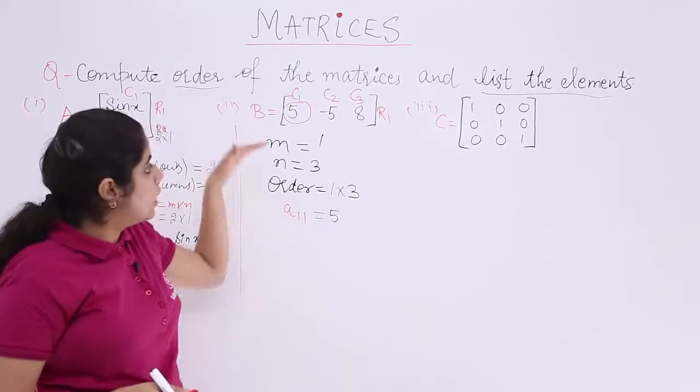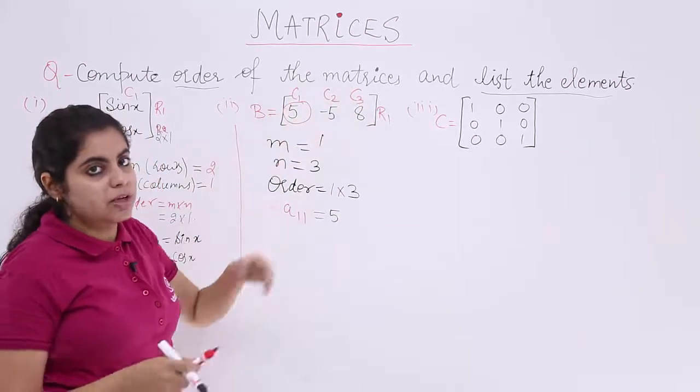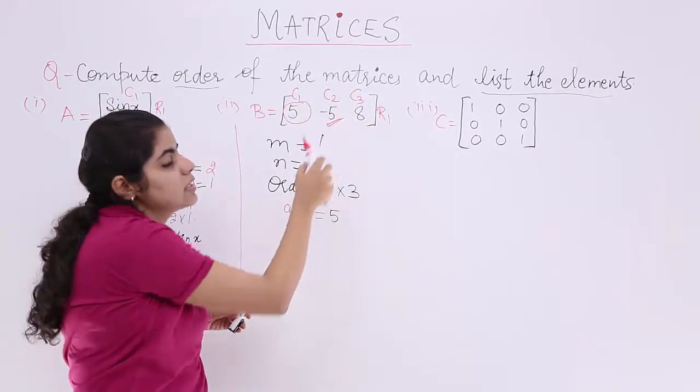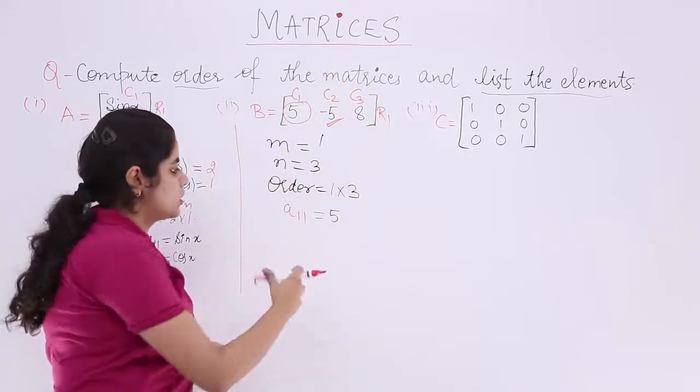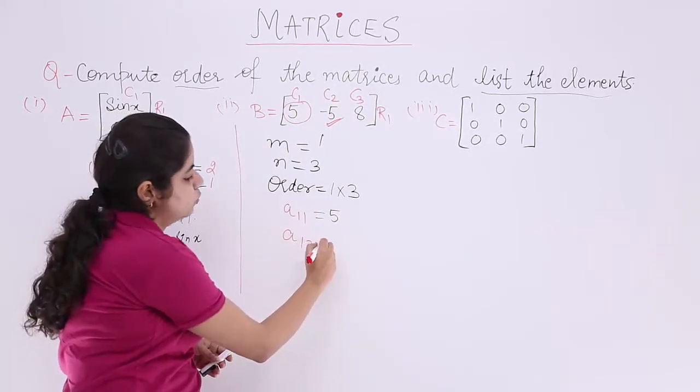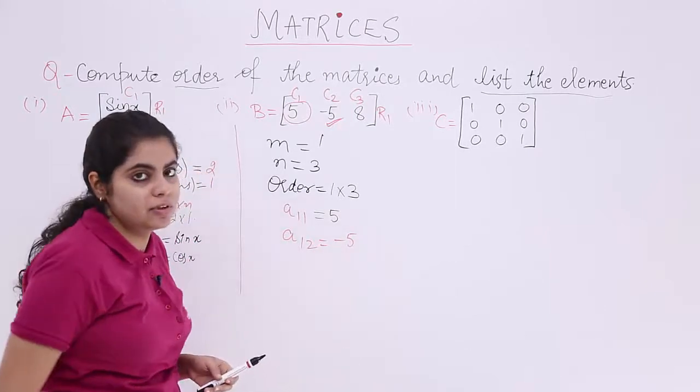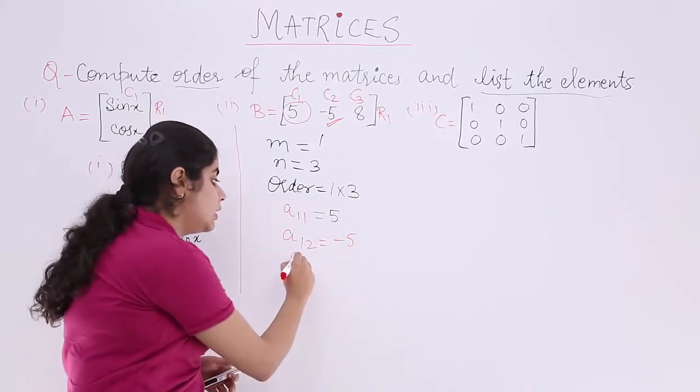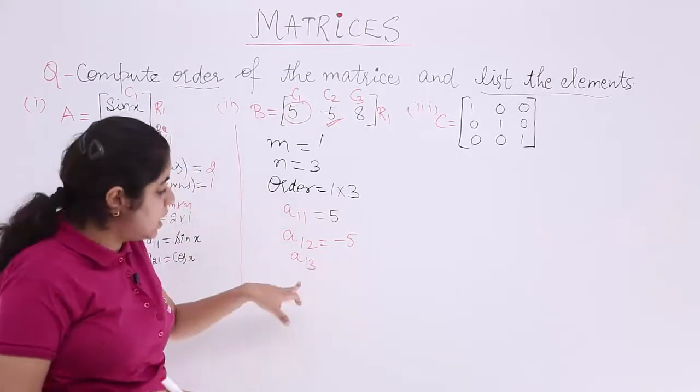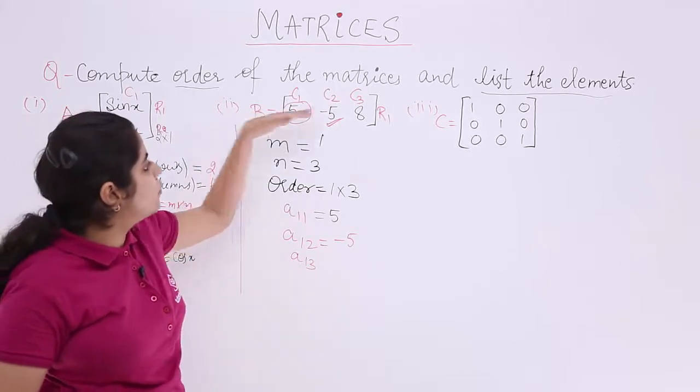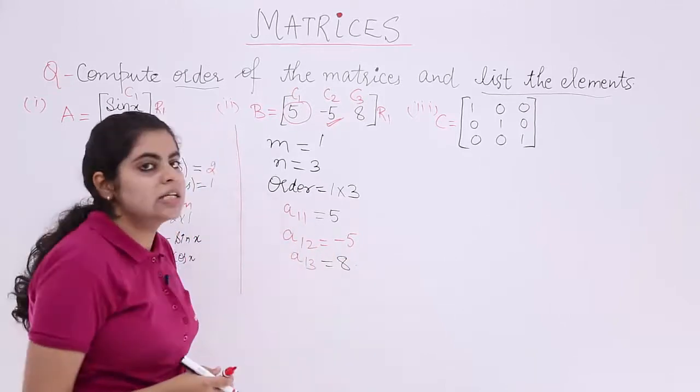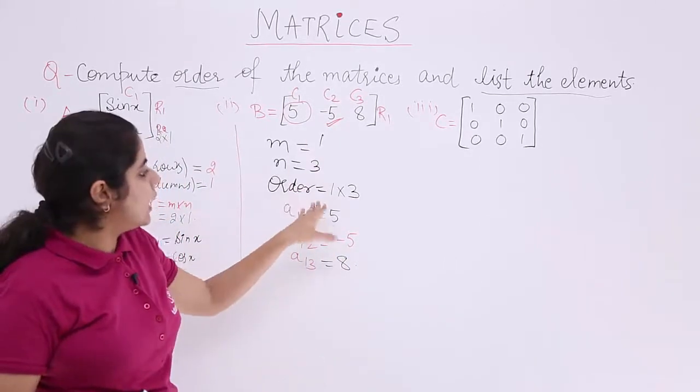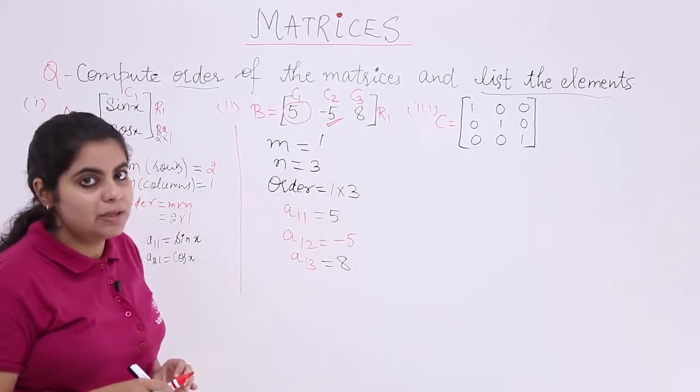I am repeating: first row, first column is 5. What about this? It is minus 5. It is first row and second column, so it is A12, which is minus 5. And what about the third thing? A13. Why? Because first row and third column is 8. So you listed the elements, you know the order. Second example done.